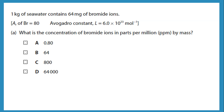One kilogram of seawater contains 64 milligrams of bromide ions. What is the concentration of the bromide ions in parts per million? We need to be careful with units: 64 milligrams divided by 1000 gives grams, and 1 kilogram times 1000 gives grams. Up and down must have the same units. Then times 10 to the 6 gives 64 parts per million.